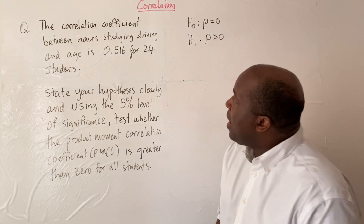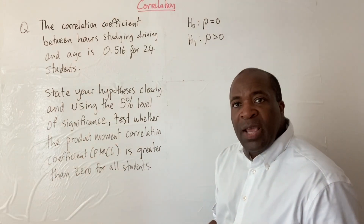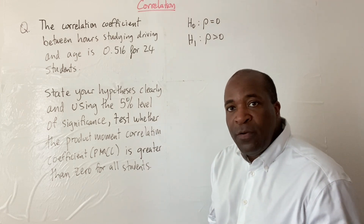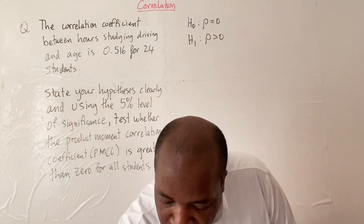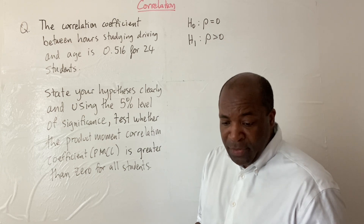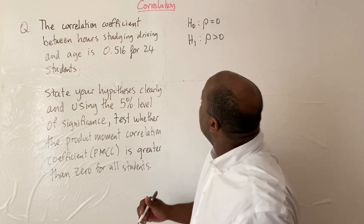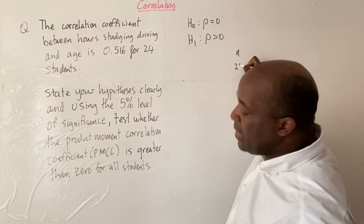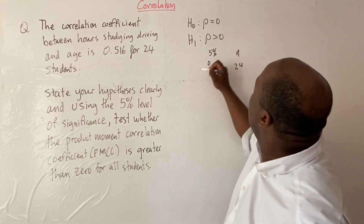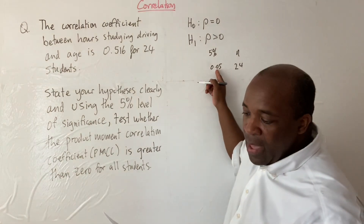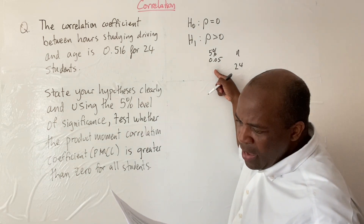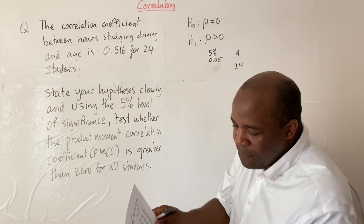Once we have done this, our standard approach will be to go to the table — this is not a calculator question. When doing hypothesis testing, you have to use the calculated critical values from the table that the exam board provides. We're going to look under the critical values for correlation coefficient, under the product moment correlation table, and scroll down to where N equals 24. Then we look at the level of significance, which is 5% or 0.05, and find the corresponding critical value: 0.3438.